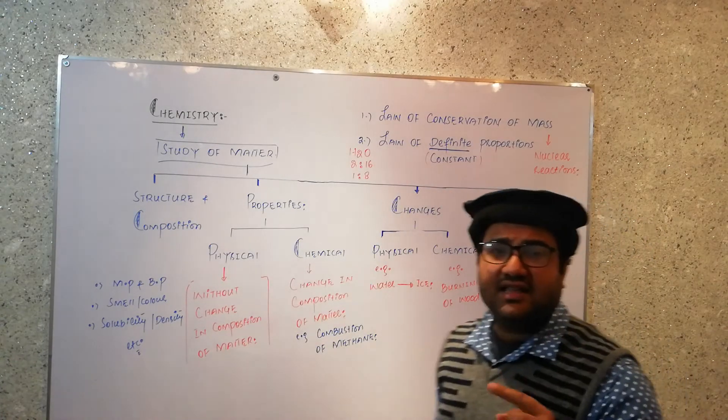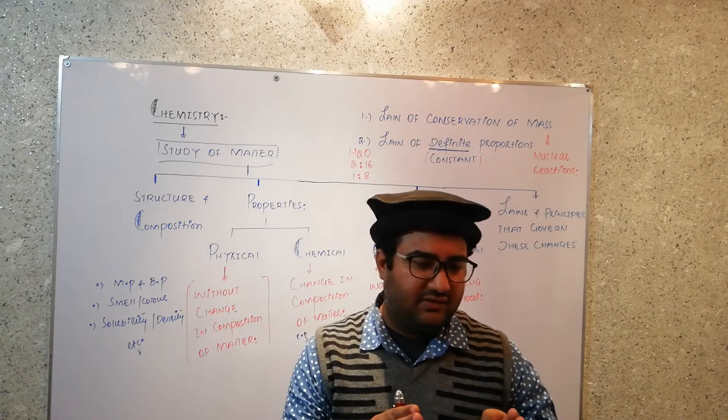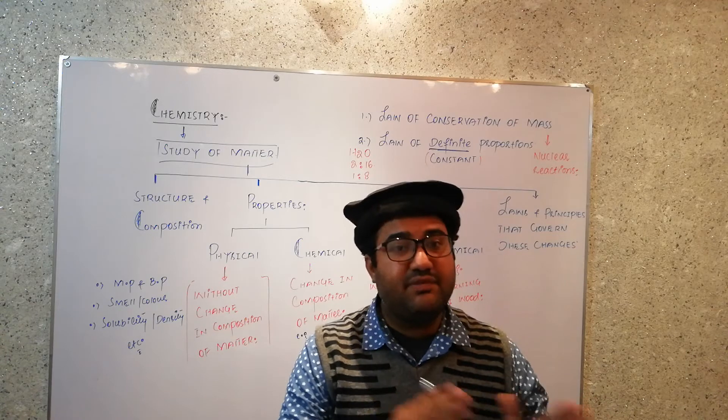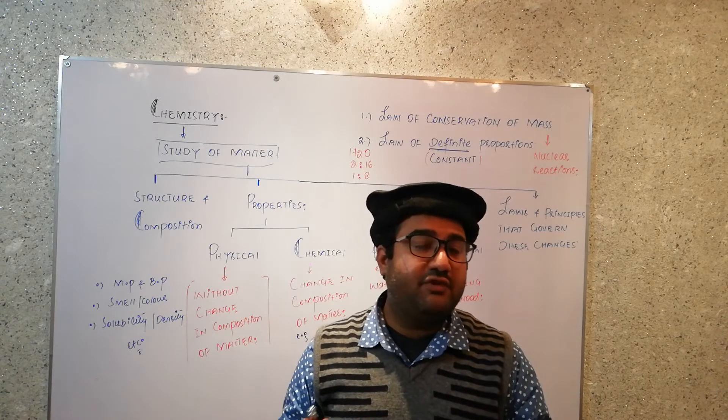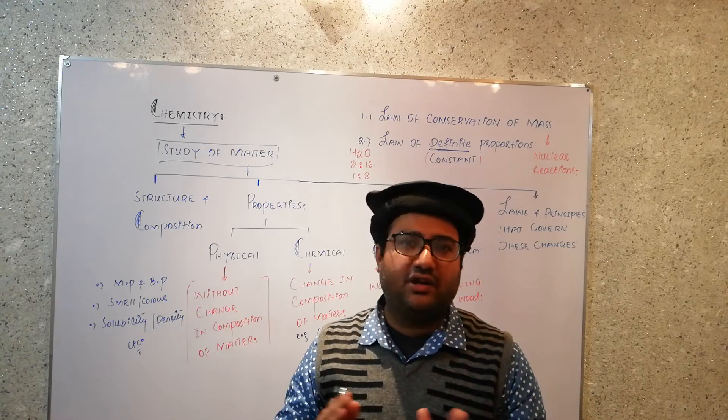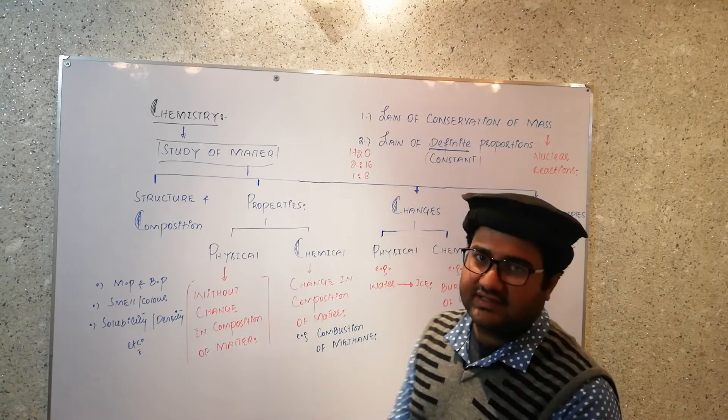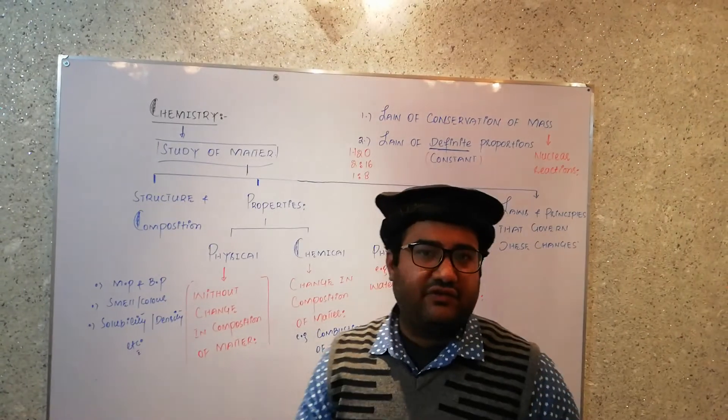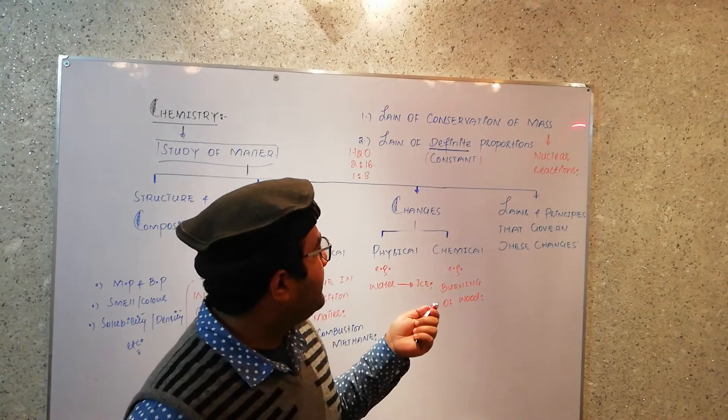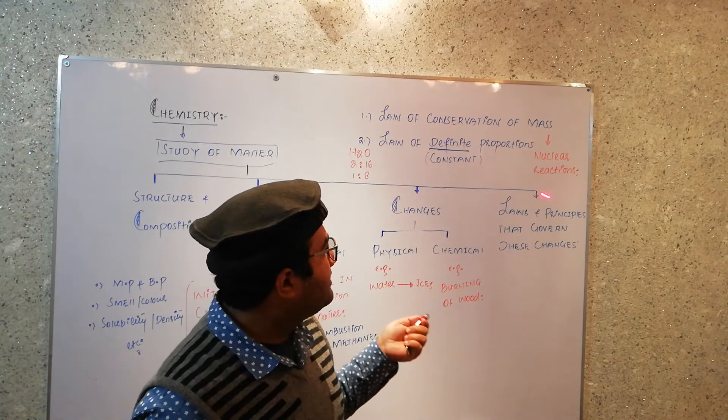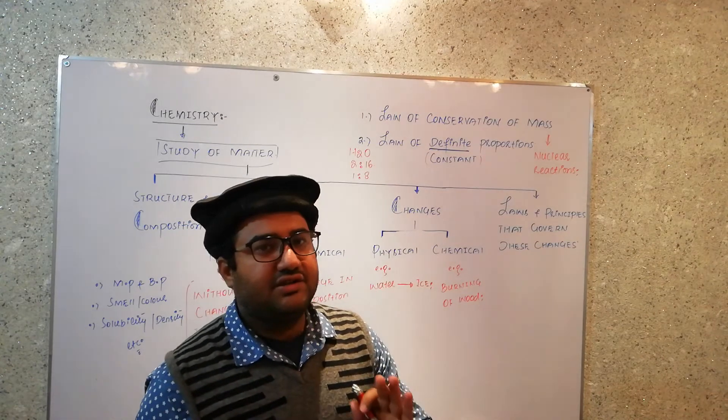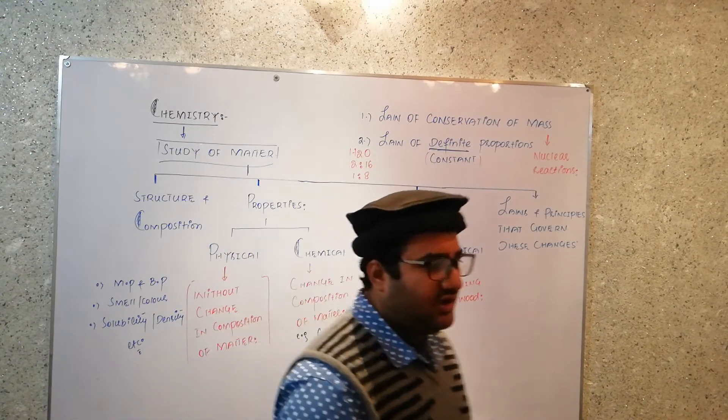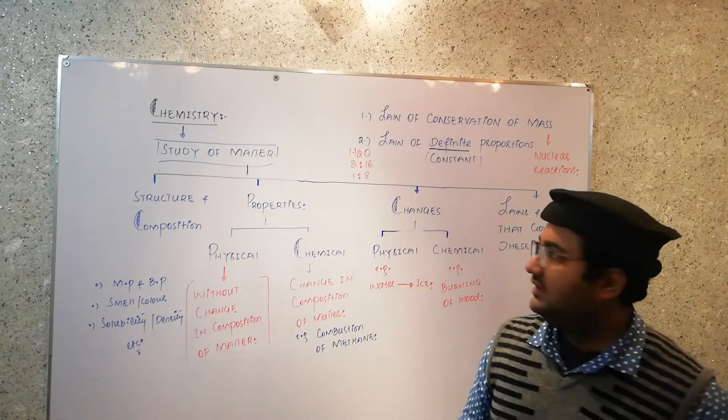When we balance the equations and we keep it in our consideration that the mass of reactants must be equal to mass of the product, when we balance the equations, actually we fulfill or obey the law of conservation of mass or law of conservation of matter. Every reaction in chemistry follows the law of conservation of mass except nuclear reactions. Nuclear reactions do not follow the law of conservation of mass. Why they do not follow? That will be discussed inshallah somewhere else.